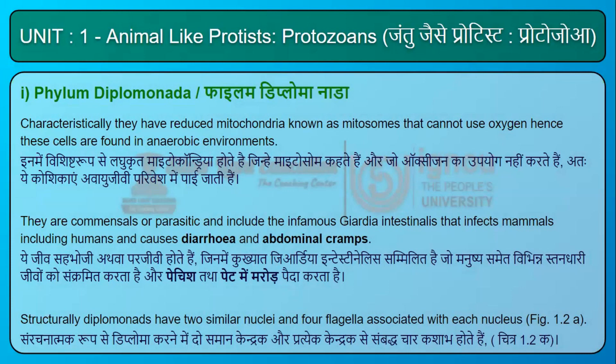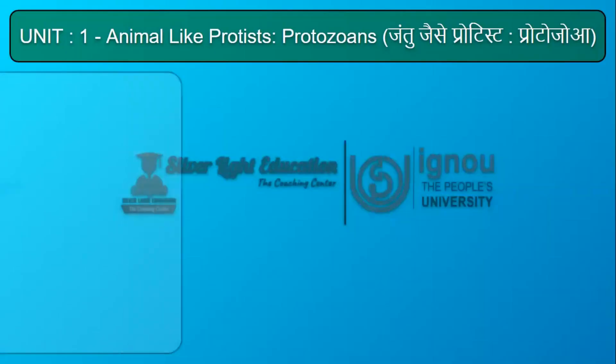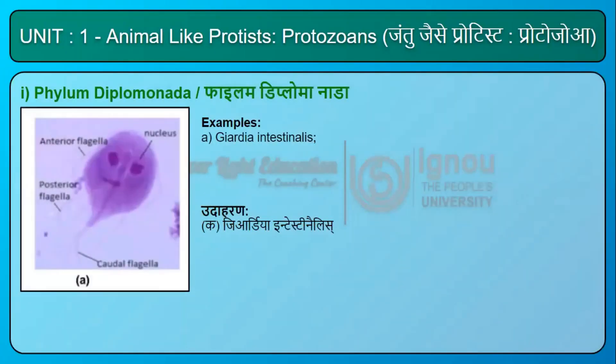They are commensals or parasitic, and include the infamous Giardia intestinalis, which infects mammals including humans and causes diarrhea and abdominal cramps. Structurally, diplomonads have two similar nuclei and four flagella associated with each nucleus (Fig. 1.2a). Look at this figure — this is Giardia intestinalis.